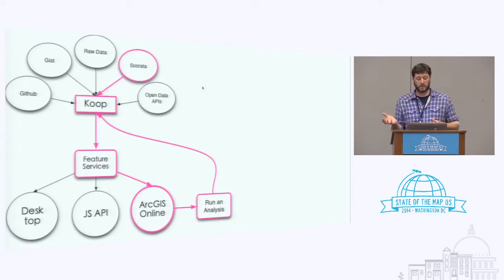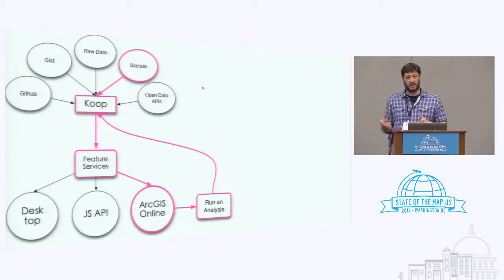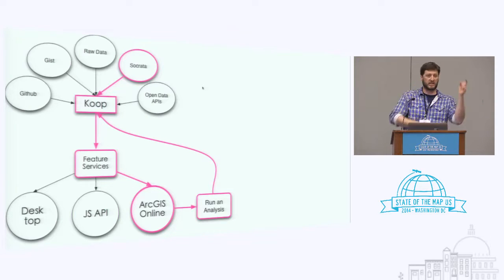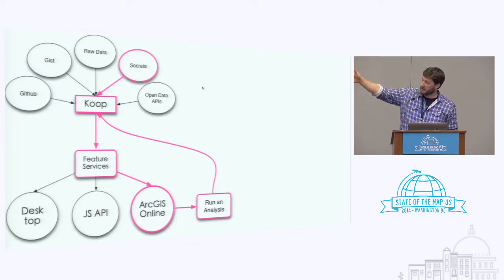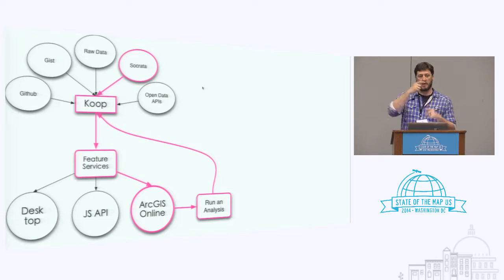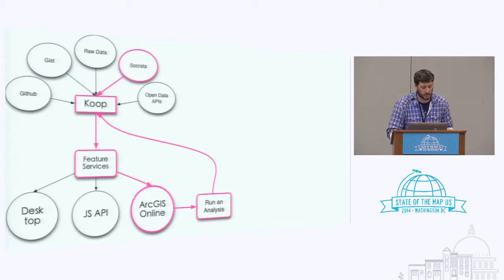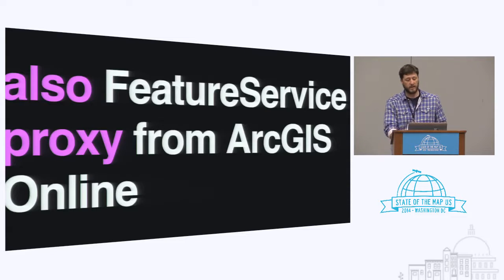What's really cool is that we can also turn feature services living inside ArcGIS Online back into GeoJSON. The whole thing is this inception of data formats that just keeps turning around in a circle. Socrata goes to Coop, goes to a feature service, goes to ArcGIS Online, we run an analysis, and it feeds back into the whole pipe. Because it's now an item on ArcGIS Online we can turn it right back into GeoJSON — a never-ending loop of formats.